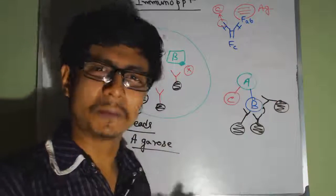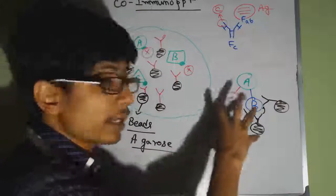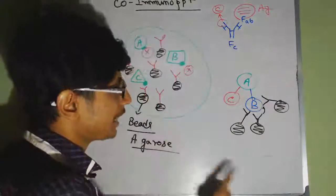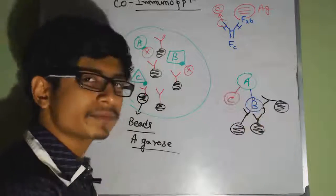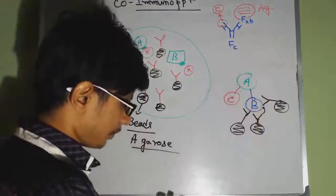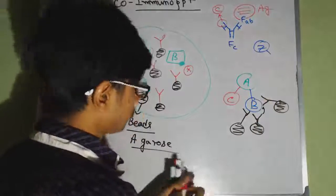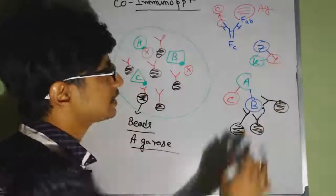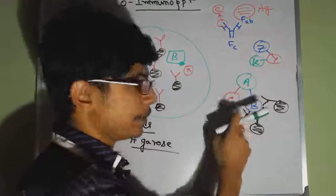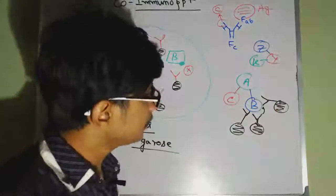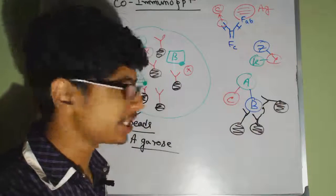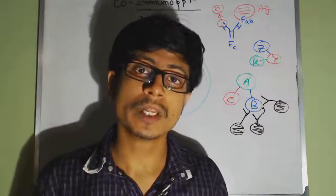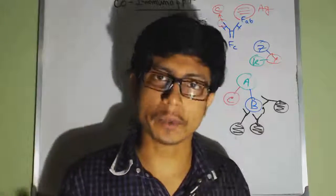Another way to use co-immunoprecipitation is to check protein-protein interactions. When we add an antibody specific against B, we pull down that specific complex. For example, if we have multiple complexes in solution — one containing A-B-C and another containing Z-Y-K — the antibody against B will drag only the B-containing complex. When we don't know which proteins are interacting, we form a hypothesis and design antibodies against particular proteins.